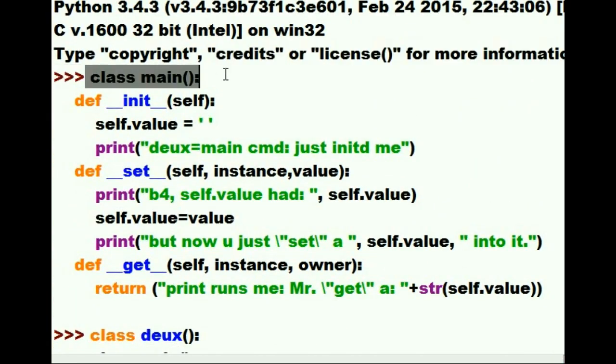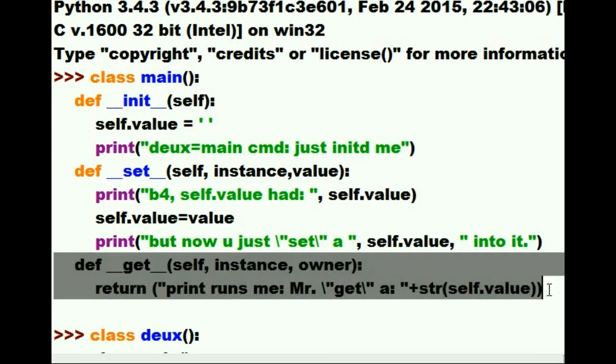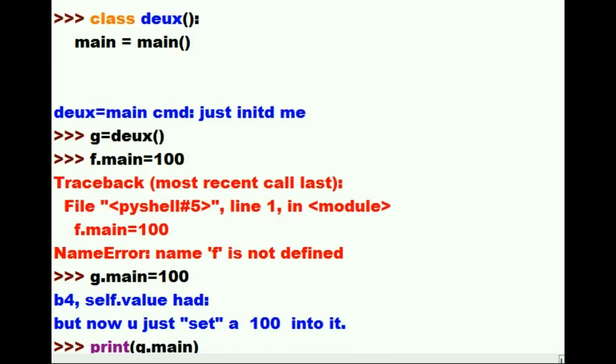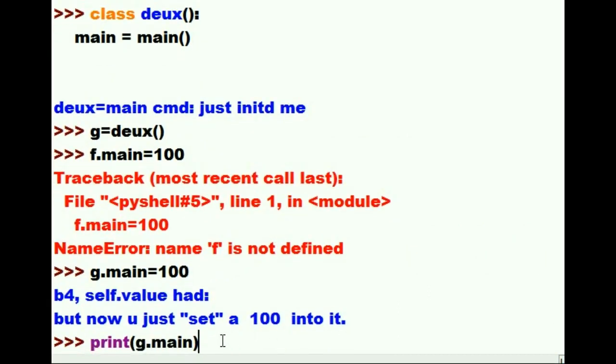That will cause the system to jump up to class main, and execute the double underscore get method, which will then return. And the print statement is the guy who runs me. Me, Mr. Get. And I'm going to go get the string version of self.value. Let's see what happens now. Print g.main. And I hit enter.